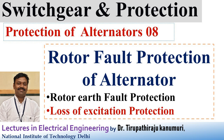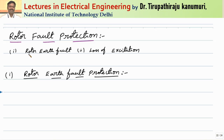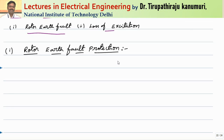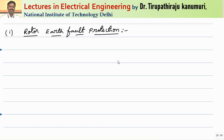Hi all, today we are going to discuss about rotor fault protection of alternators. We have seen previously that the major rotor faults are rotor earth fault and loss of excitation. These are the two major faults that happen in the rotor which care should be taken. Let us see one by one in detail.